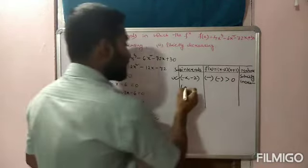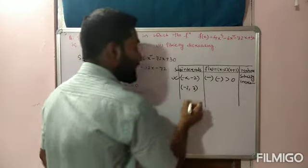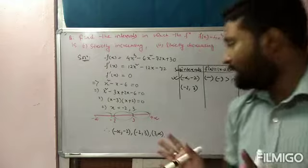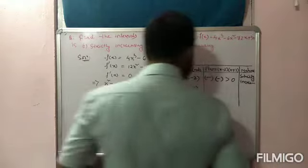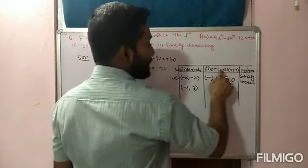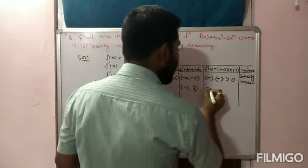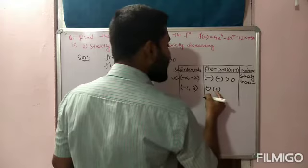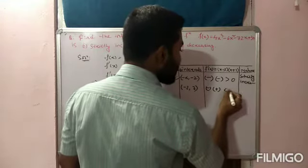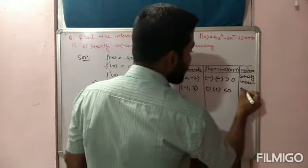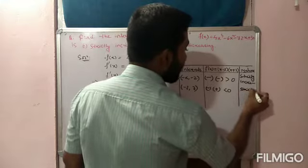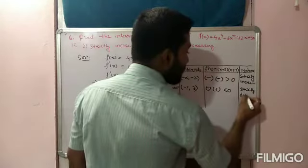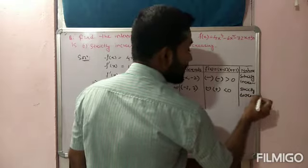For the second sub-interval (-2, 3), take x = 0. Then (0 - 3) is negative and (0 + 2) is positive; negative × positive = negative, so f'(x) < 0. Therefore the function is strictly decreasing on (-2, 3).